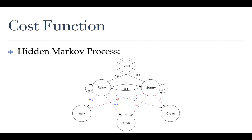The problem we're looking at in this hidden Markov process involves three observable states: whether a person is walking, shopping, or cleaning. The hidden states in this example are related to the weather. We have two hidden features — whether it's raining or sunny. One would expect that when it's raining, people are more likely to shop or clean than to walk outside.